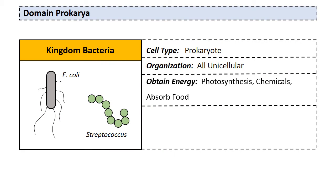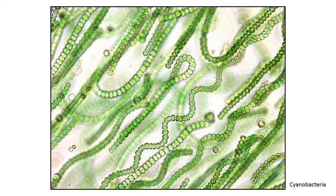Bacteria obtain energy in three different ways depending on the species. Some are photosynthetic — they use the sun. Some are chemosynthetic — they digest chemicals essentially. Others just absorb food across their cell membranes. Here's an example of photosynthetic bacteria: cyanobacteria, which appear to be a multicellular organism but are really colonial strands. Cyanobacteria produce most of the oxygen on planet Earth.